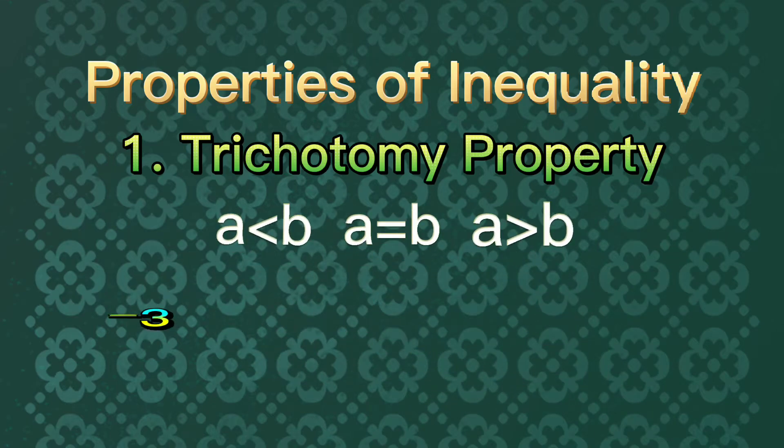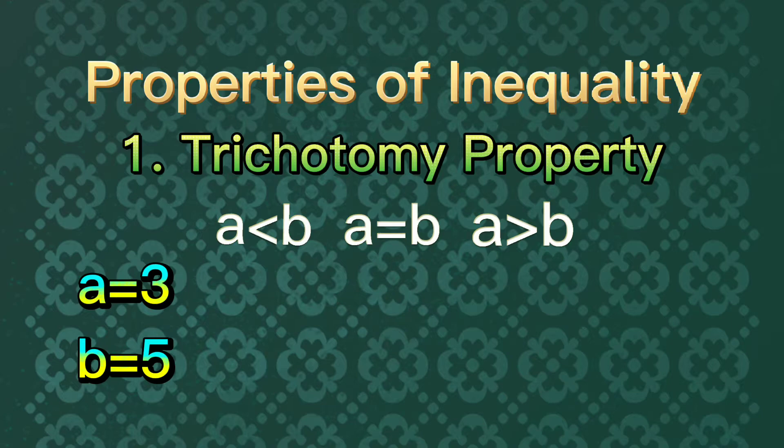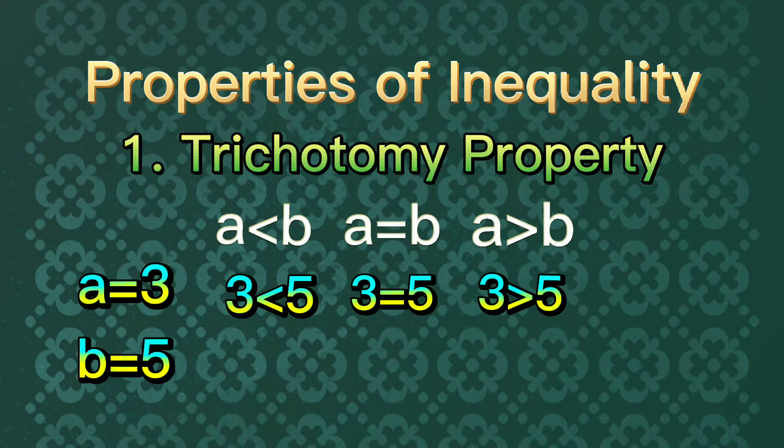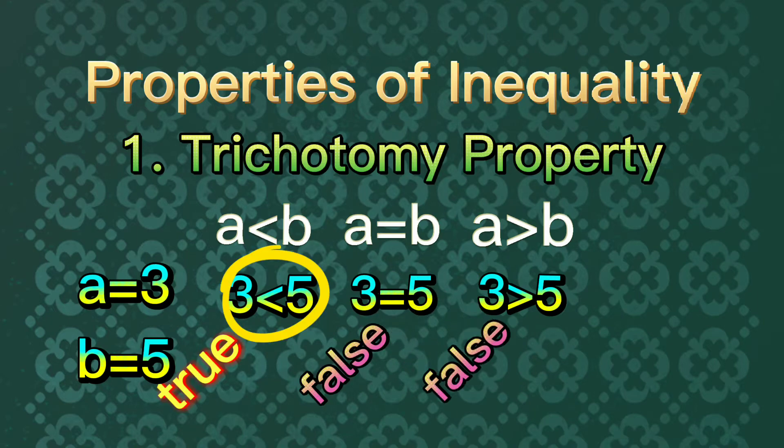For example, A equals 3 and B equals 5. Let us substitute this into our inequality sentences. Only one here is true, and that is 3 is less than 5.